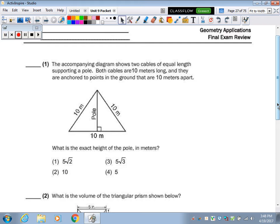The accompanying diagram shows two cables of equal length supporting a pole. Both cables are 10 meters long, and they're anchored to points on the ground that are 10 meters apart. So you have an equilateral triangle, 10-10-10. What's the exact height of the pole?